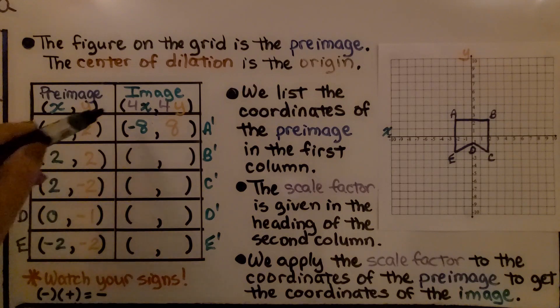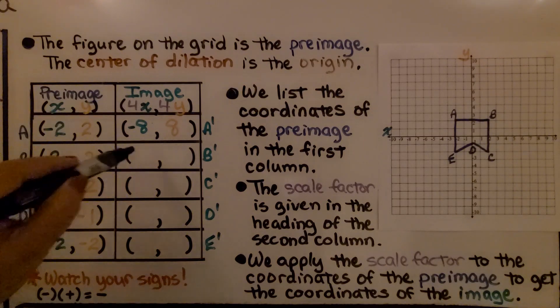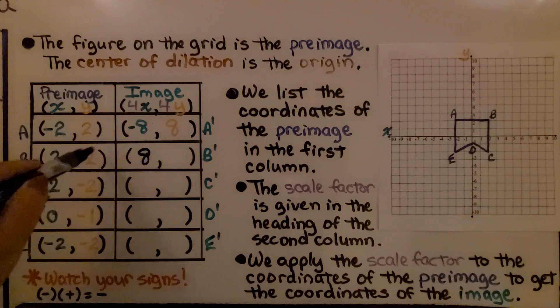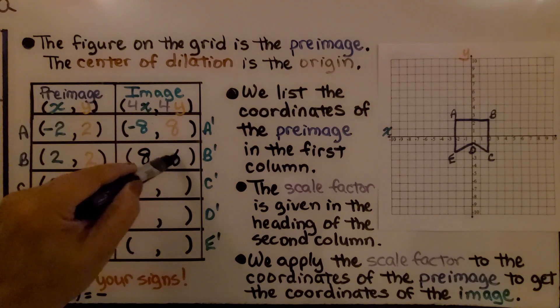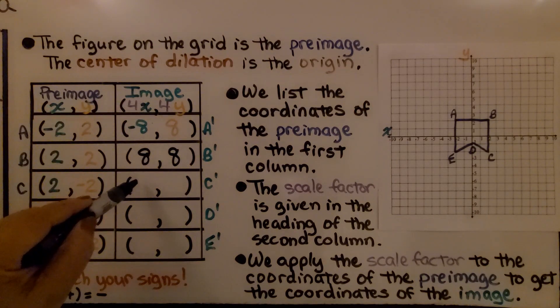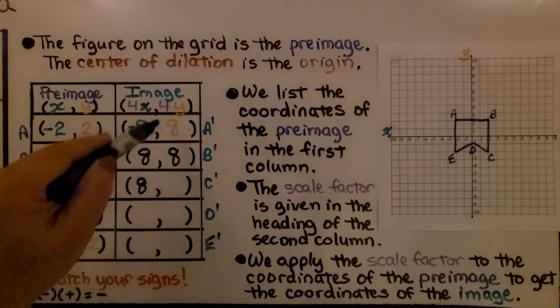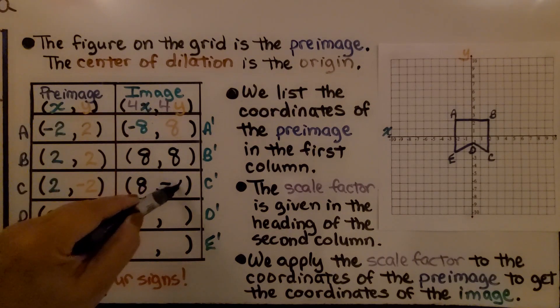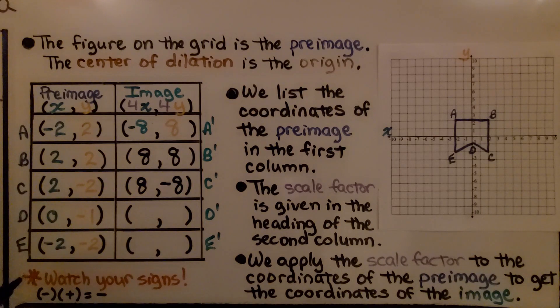So we're going to do negative 2 times 4, which is negative 8, and 2 times 4 is 8 for y. Then we're going to do 2 times 4, which is 8, and negative 2 times 4, which is negative 8. Watch your signs. A negative times a positive makes a negative.